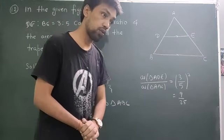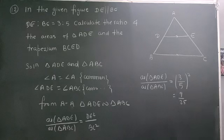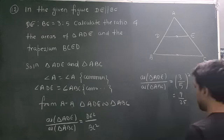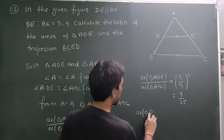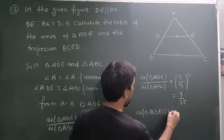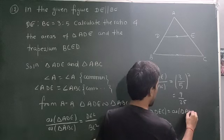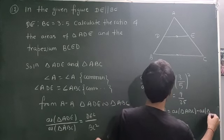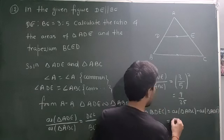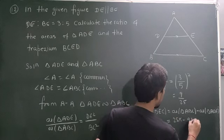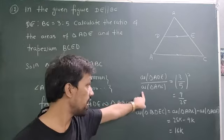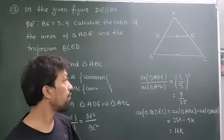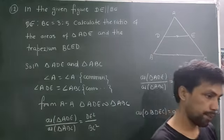So area of trapezium BCED equals area of △ABC minus area of △ADE, which is 25k minus 9k equals 16k. Area of △ADE is 9k, area of △ABC is 25k. Now we can easily find the ratio.